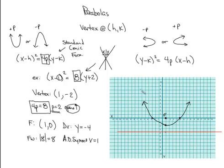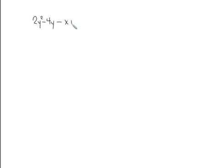Let's look at another example: 2y² − 4y − x + 5 = 0. The problem is it's not in the proper form. It is a parabola because only one variable is squared — we have a y² but no x². The other conic sections all have both x² and y². So this is a y-squared parabola, and we're going to isolate the y terms on one side.